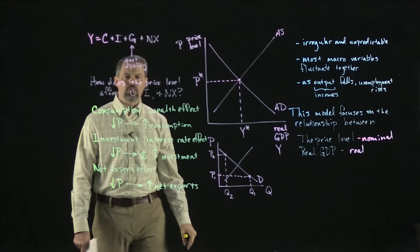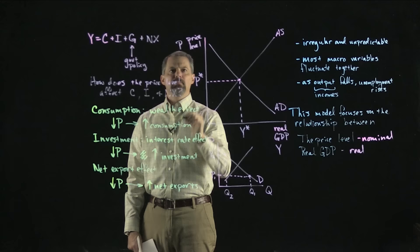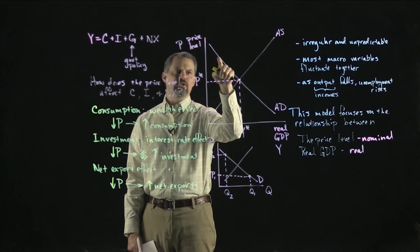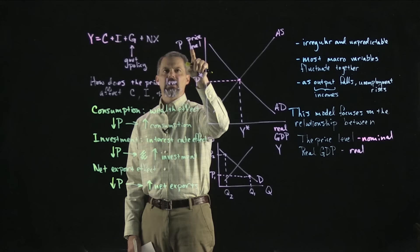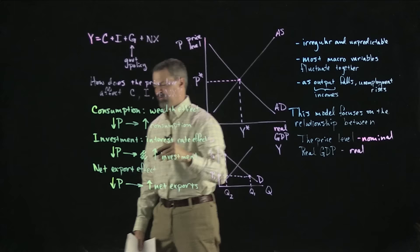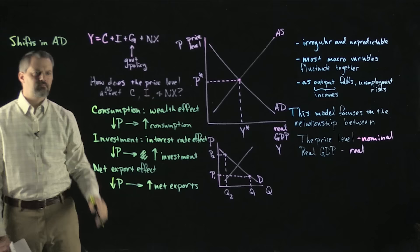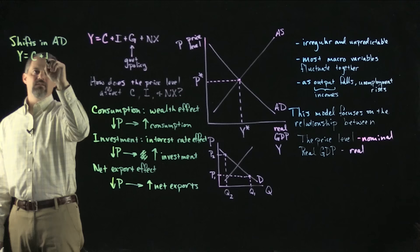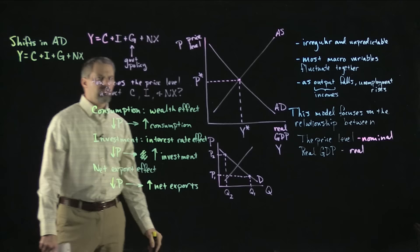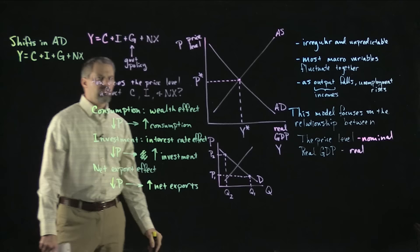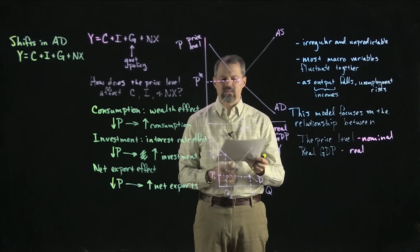Now let's talk about why the aggregate demand curve might shift. Changes in the price level move us to a new point on the existing AD curve. But if something other than the price level changes, the aggregate demand curve itself will shift. The best way to think about shifts in aggregate demand is to think about shifts that have to do with consumption, investment, government spending, and net exports — always remember the national income identity.